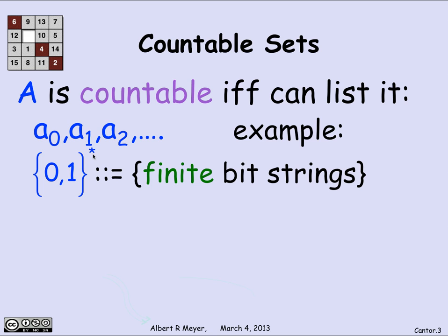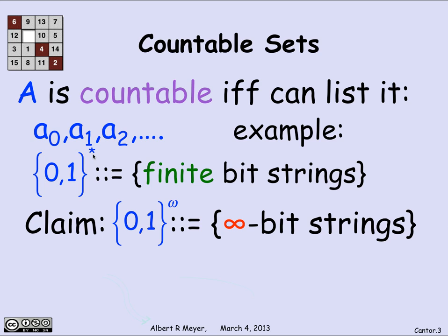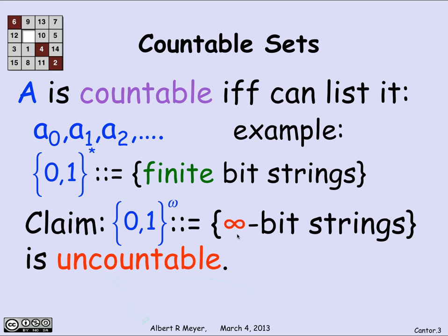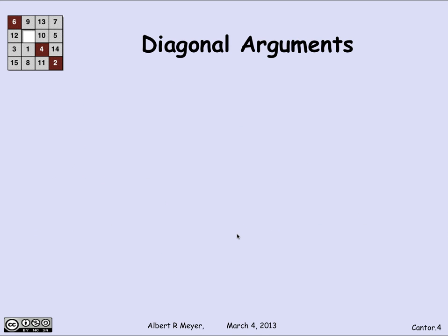The finite binary strings are countable. What we're going to prove now is that the infinite binary strings are not countable. We use the notation {0,1}^ω for infinite binary strings. The way we prove this set is uncountable is by what's known as a diagonal argument, which goes back to Cantor's original ideas.